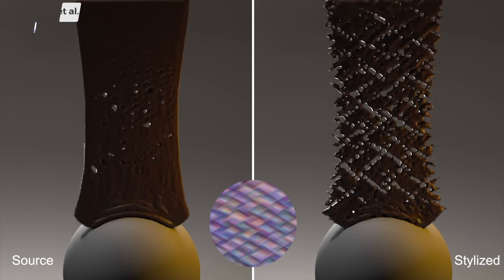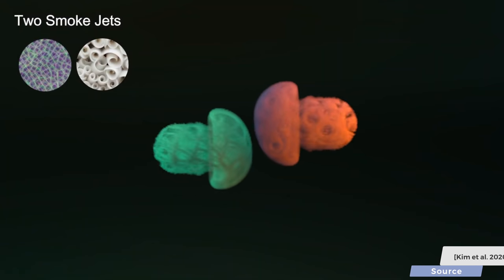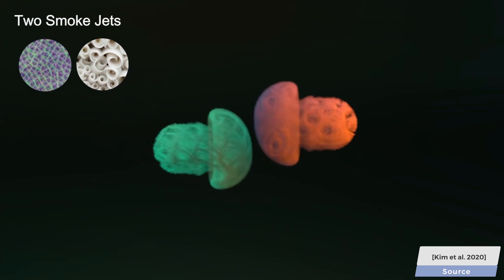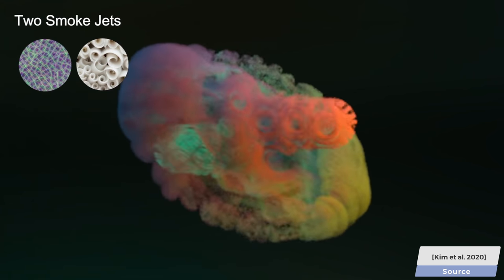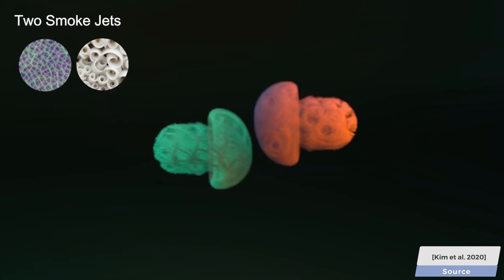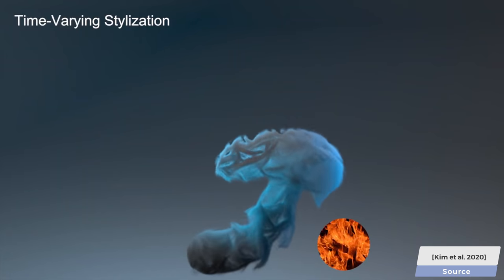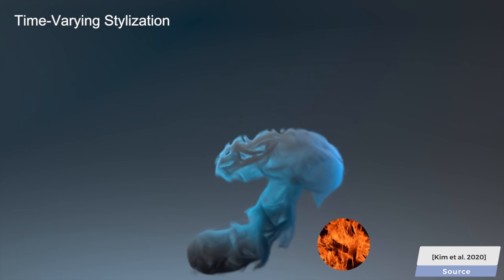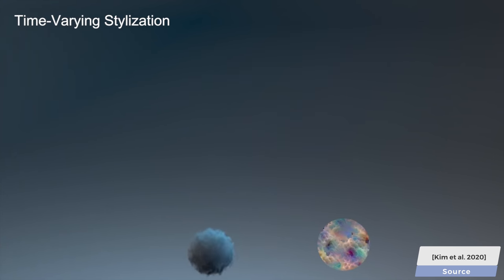One, because the styles are now attached to particles, we can choose different styles for different smoke plumes, and they will remember what style they are supposed to follow. Because of this advantageous property, we can even ask the particles to change their styles over time, creating these heavenly animations.